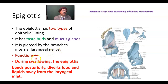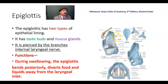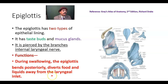What are the functions of the epiglottis? The epiglottis helps in deglutition — swallowing. The epiglottis bends posteriorly and protects the laryngeal inlet, diverting food and liquids away from it. That is the primary function of the epiglottis.